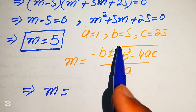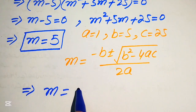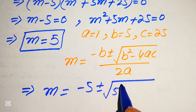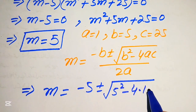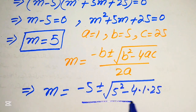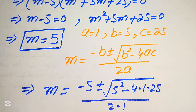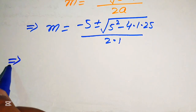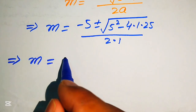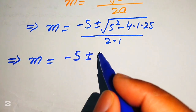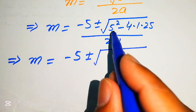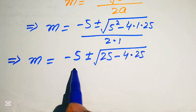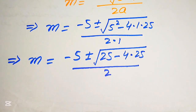Now we substitute the values of a, b, and c. The value of b is 5, so it becomes minus 5 plus or minus square root of 5 squared minus 4 times 1 times 25, divided by 2 times 1. In the next step this gives m equals to minus 5 plus or minus square root of 25 minus 100, divided by 2.